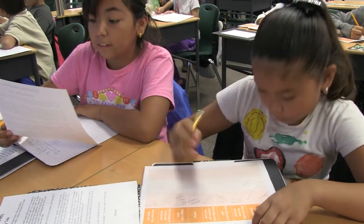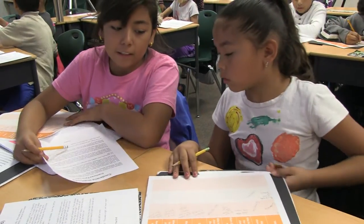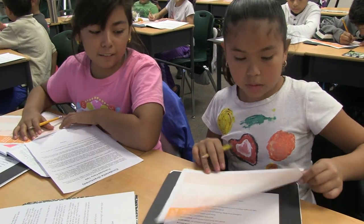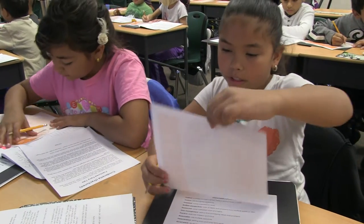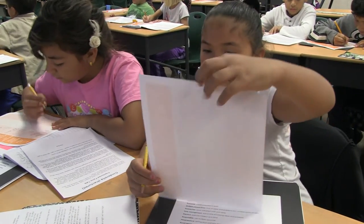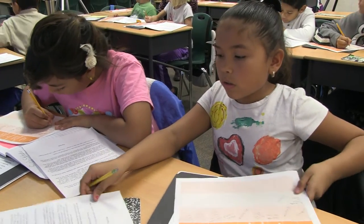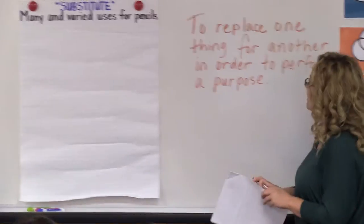When you're teaching creative and critical thinking skills, it's something that needs to happen with explicit instruction. We can't just tell kids to be creative. We can't just tell them to prove with evidence. We actually have to teach them what those things mean, why you do it, when we do it in the real world, and why we do it in the academic setting.